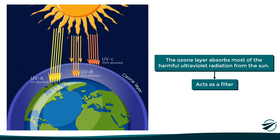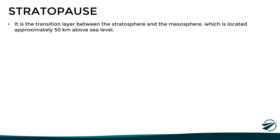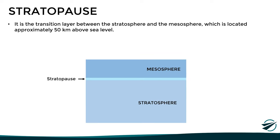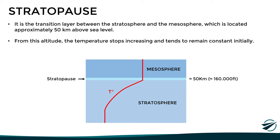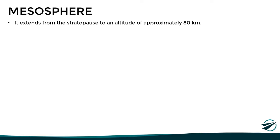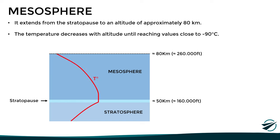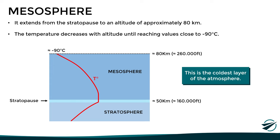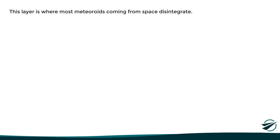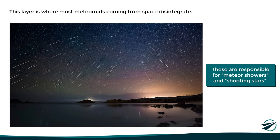Continuing with the layers of the atmosphere, just where the stratosphere ends we find the stratopause, which is a thin transition layer between the stratosphere and the mesosphere, located at approximately 50 kilometers or 160,000 feet of altitude. Its main characteristic is that from this level the temperature stops increasing and tends to remain constant with altitude initially. Right above this transition layer we find the mesosphere, which extends from the stratopause up to an altitude of around 80 kilometers or 260,000 feet. The main characteristic of the mesosphere is that the air temperature decreases again with altitude, reaching values of around minus 90 degrees at the highest levels, making it the coldest layer of the atmosphere. It is also in this layer where most meteorites from space normally disintegrate, which are responsible for meteor showers and shooting stars.